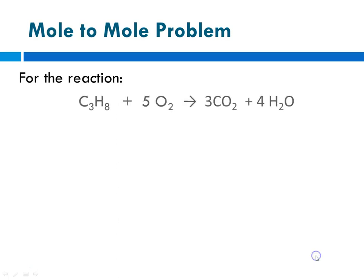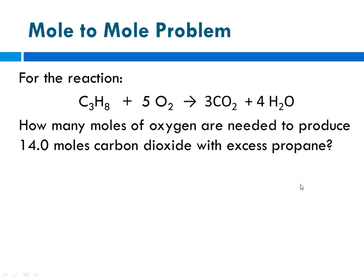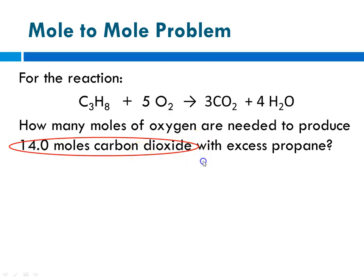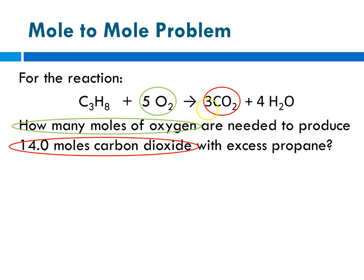Here's a problem. For the reaction where propane reacts with 5 moles of oxygen to produce 3 moles of carbon dioxide and 4 moles of water — how many moles of oxygen are needed to produce 14 moles of carbon dioxide with excess propane? The excess propane part is just telling you there's plenty of propane; you're not going to run out. You always want to identify the given — 14 moles of carbon dioxide — and the unknown — moles of oxygen. When you first begin, it's a good idea to circle the given and the unknown because those are the two things that will become your mole ratio.